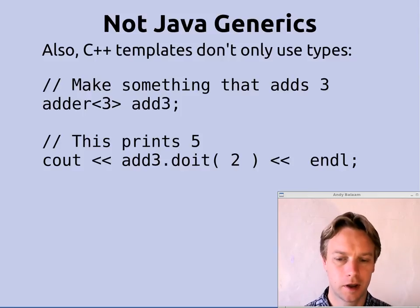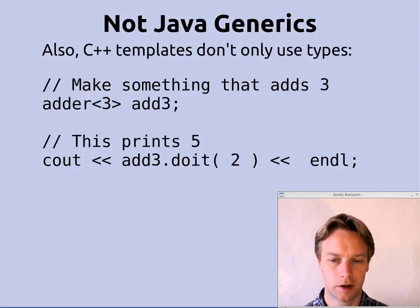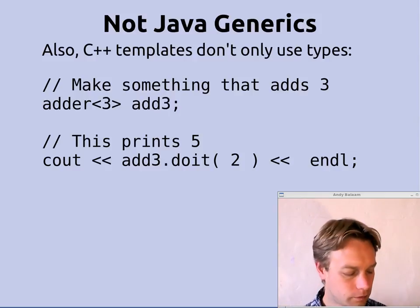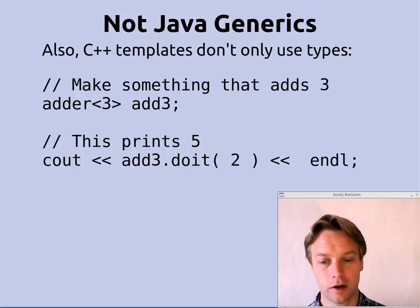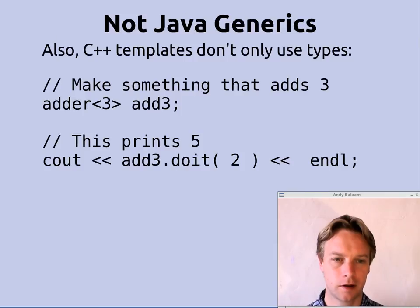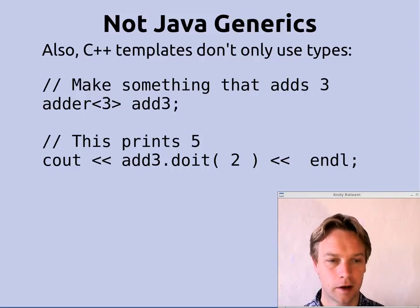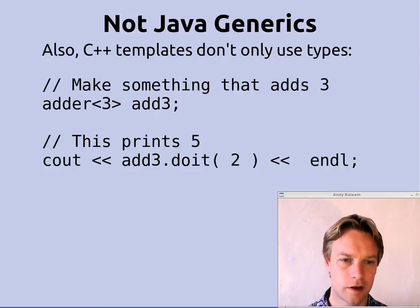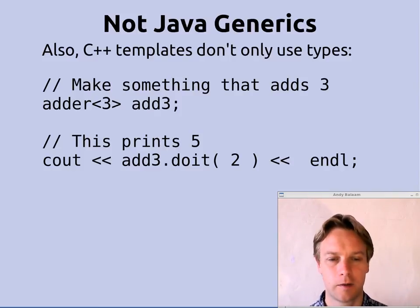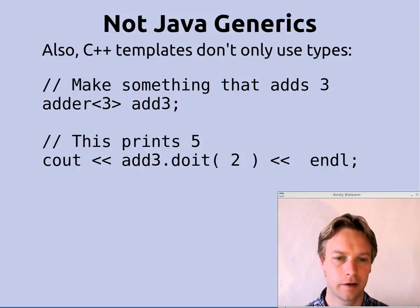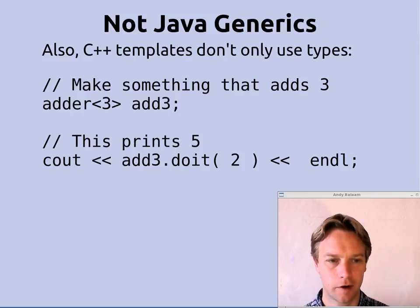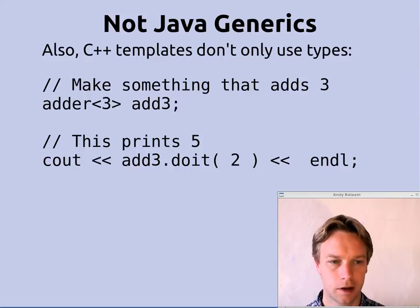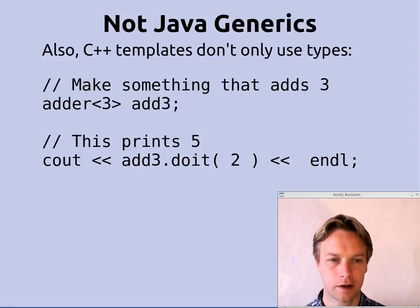C++ templates are not limited only to types or classes. Java generics only allow classes — they don't allow things like int, you have to use Integer. In C++ templates you can do anything you like. So if you want to make an adder that adds three when you call its doit method, you can make an adder and put the number three in the angle brackets and make an instance of it — we're calling that add_three. When you call the doit method on add_three and pass in a two, it adds three to two and returns five. So at compile time you're specifying a number that's going to be part of this instantiation of your adder class template.